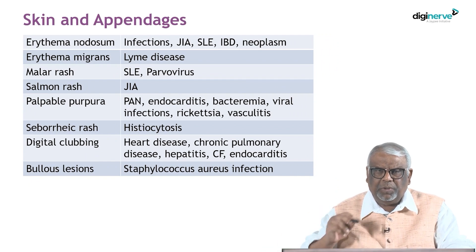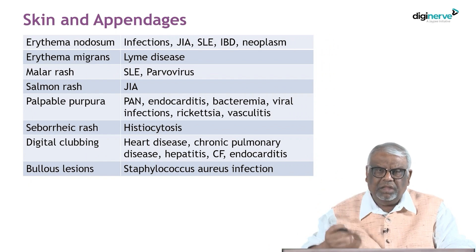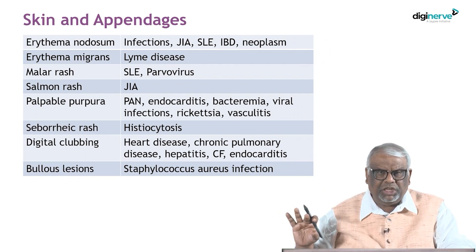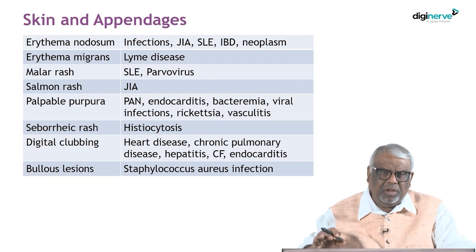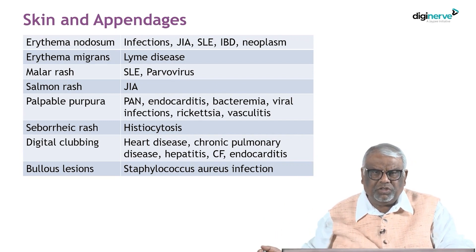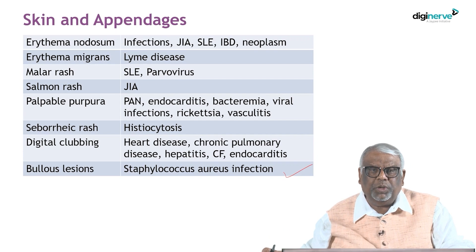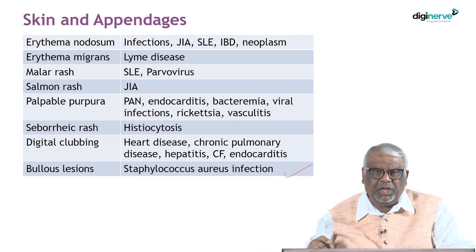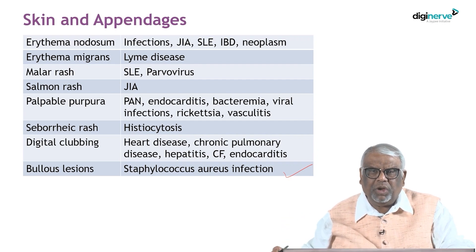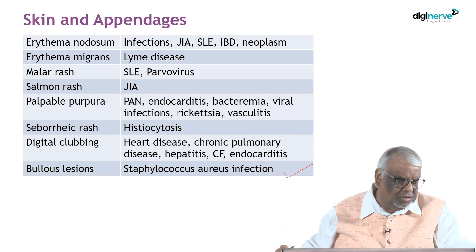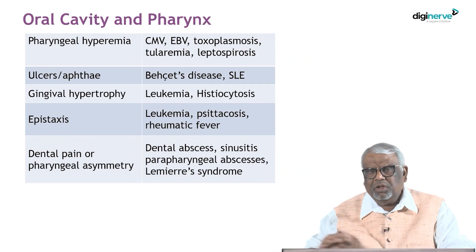Examine the skin very carefully. Look for erythema nodosum, erythema migrans, malar rash typical in SLE, salmon rash typical of JIA, palpable purpura present in vasculitis syndromes such as polyarteritis nodosa, seborrheic rash characteristic of histiocytosis, and bullous lesions suggestive of Staphylococcal infection. Presence of clubbing indicates chronic pulmonary disease, chronic GI disease, endocarditis, or cystic fibrosis — all of which can present with pyrexia of unknown origin.